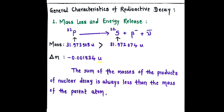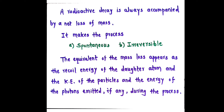The conclusion is that the sum of the masses of the products of nuclear decay is always less than the mass of the parent atom. Here the mass of sulfur is less than the mass of phosphorus. We can say that a radioactive decay is always accompanied by a net loss of mass, which makes the process spontaneous and irreversible. Radioactive decay is a process which takes place on its own accord and it is also irreversible.